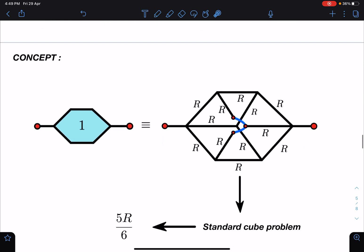You can derive also - like first 3 in parallel, then 6 in parallel, and then 3 in parallel. So total you can see R by 3, R by 6 plus R by 3 in series - 5R by 6 you will be getting.